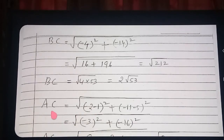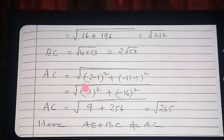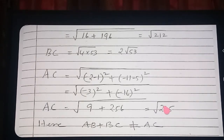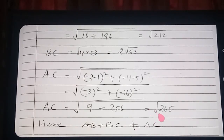Now similarly find out the value of AC. Using the same formula: (-2 minus 1) whole square plus (-11 minus 5) whole square. So (-3) squared plus (-16) squared gives 9 plus 256 equals 265. Therefore AC is equal to root 265. Now you have AB as root 5, BC as 2 root 53, and AC as root 265.